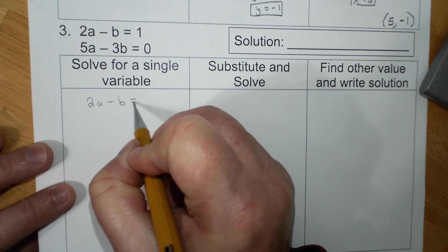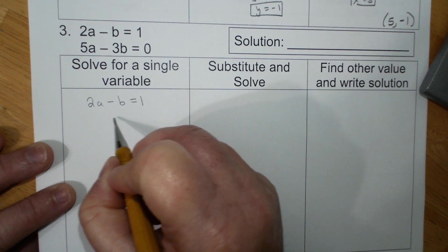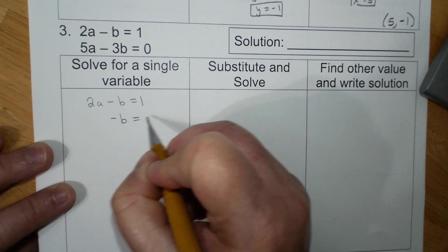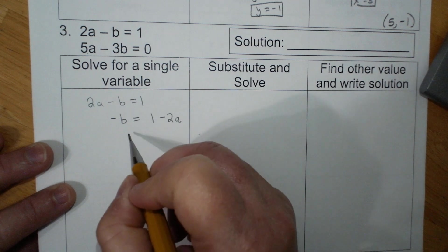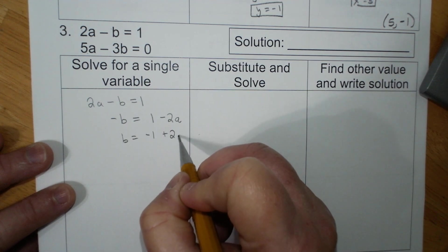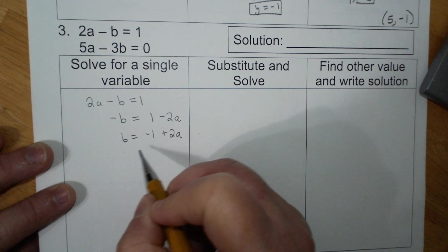Negative B equals 1 minus 2a. B equals negative 1 plus 2a. I can leave it like that.